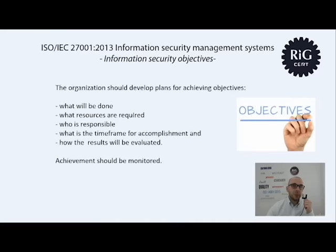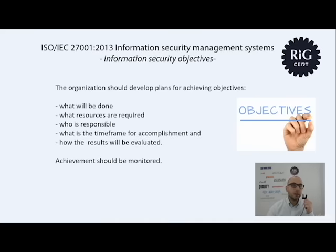Once established, objectives must be accomplished. ISO 27001 requires a plan for achieving objectives. This plan details what actions are to be taken, what resources will be used — financial, people, equipment, time — who is responsible for implementing the actions, the time frame for achieving the objectives, and how the results will be evaluated. The achievement of security objectives has to be monitored, and objectives must be updated whenever there is a need.